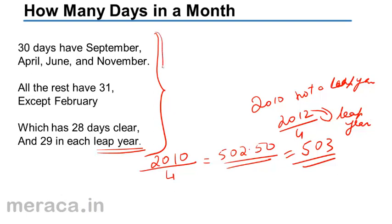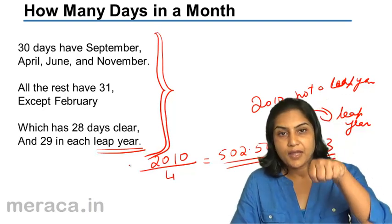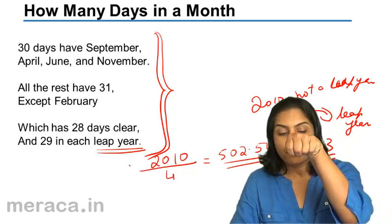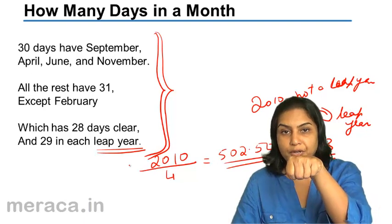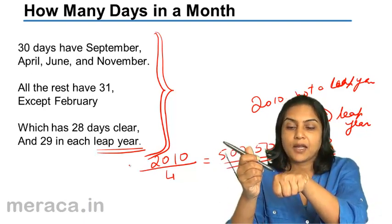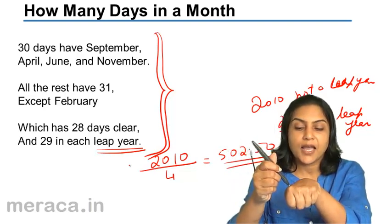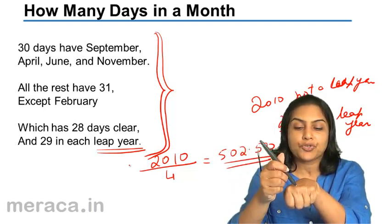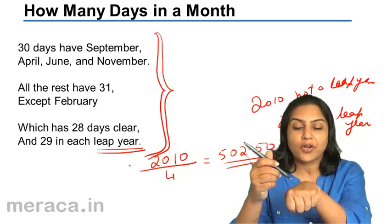This is one way of remembering the number of days in a month. Another way is by using the fist. We could take the fist and the knuckles — the upper portions of the knuckles represent months with 31 days, and the lower valleys represent months that do not have 31 days.